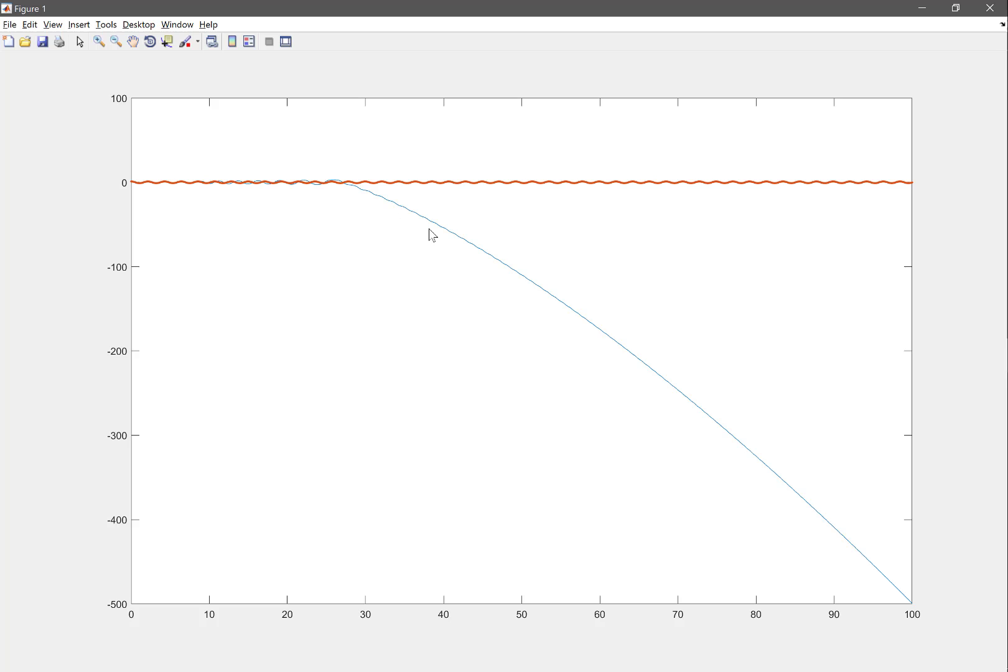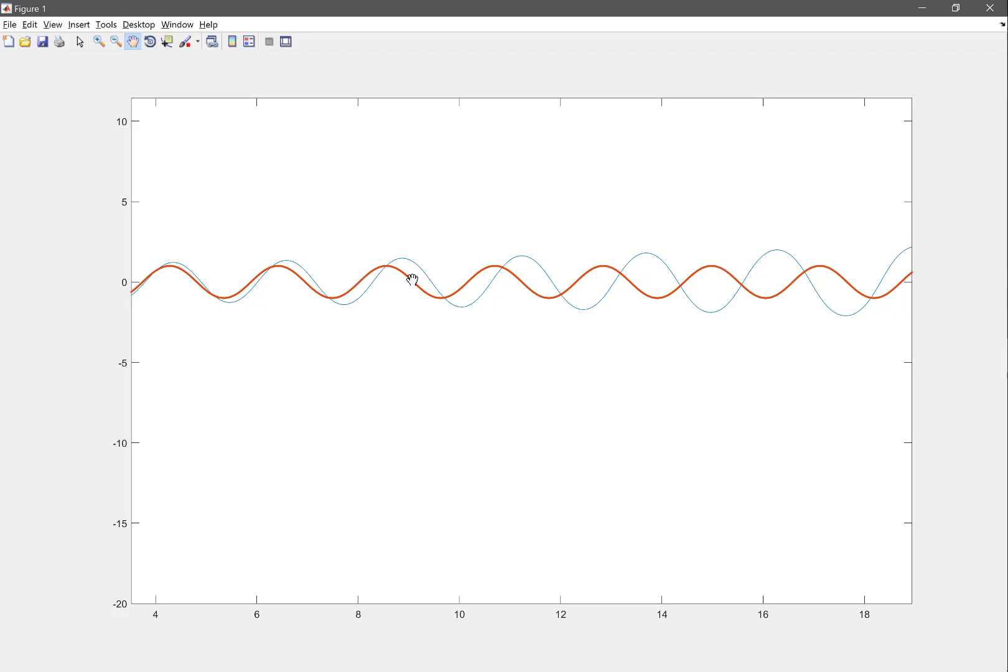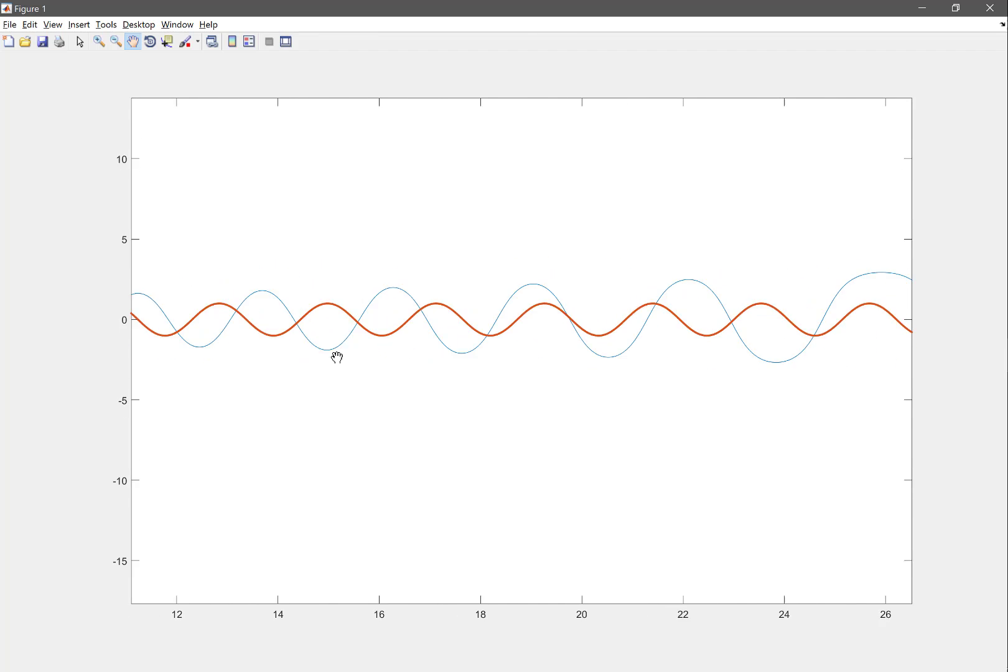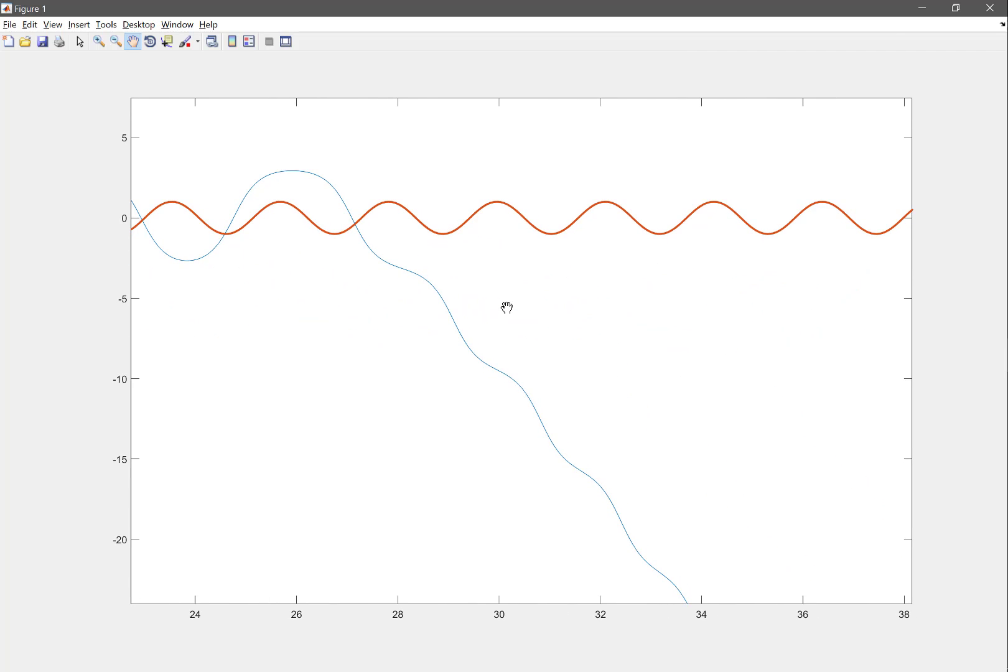As you can see, the error just goes large pretty much exponentially. The error just goes larger and larger pretty quickly. Initially it's pretty small and just goes larger. The phase is off and ultimately it goes over the top and just diverges.